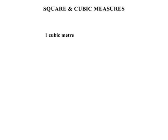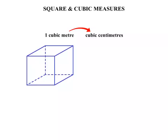Now what about volume? 1 cubic metre. And let's say we were converting to cubic centimetres. Well, 1 cubic metre is 1 metre by 1 metre by 1 metre.